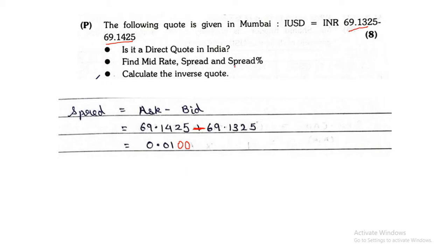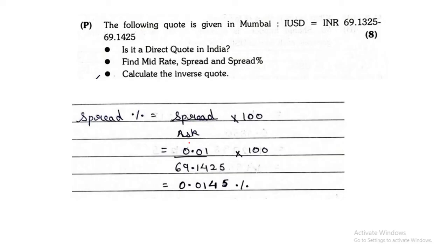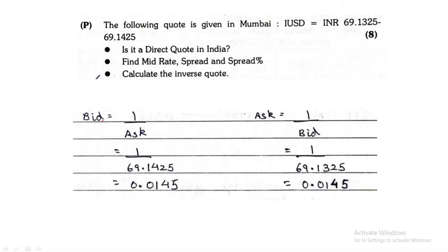Now you have to find the spread percent, the third thing. Spread percent was spread upon the ask, into 100. So the spread is 0.01 divided by 69.1425 — that is your ask — into 100. You divide and multiply, and you will get the spread percent. And the last part is to calculate the inverse quote. Inverse is opposite. To find the bid, it will be 1 upon ask; and to find ask, it will be 1 upon bid. You apply the reciprocal and whatever answer you get will be your final inverse quote.